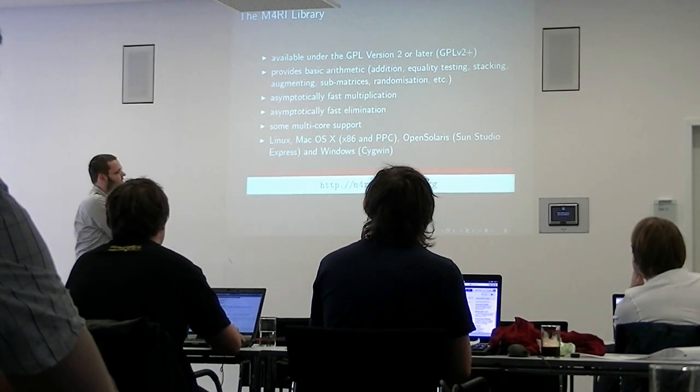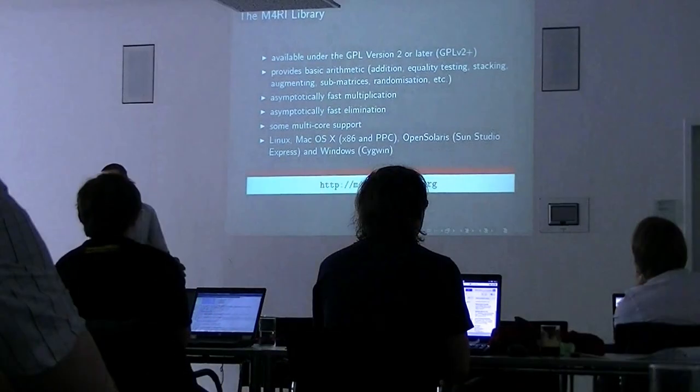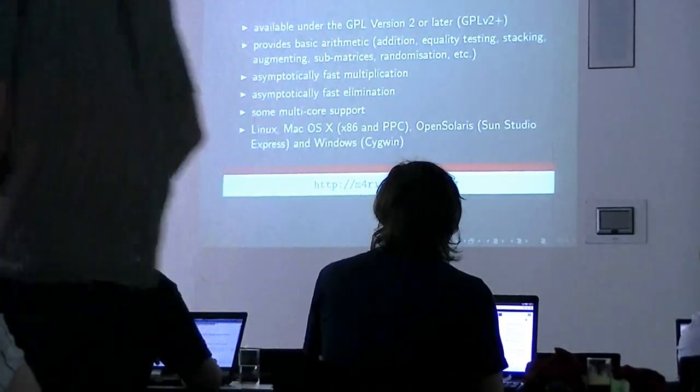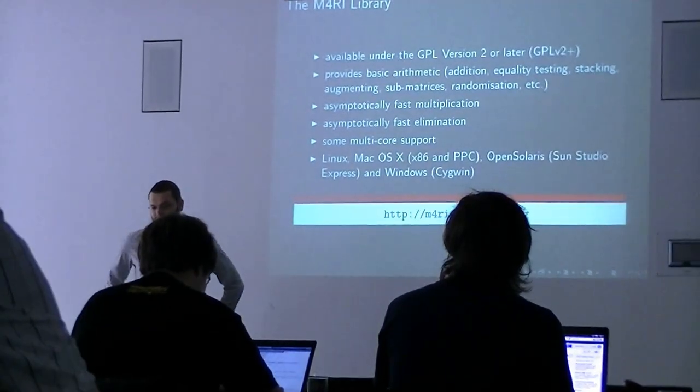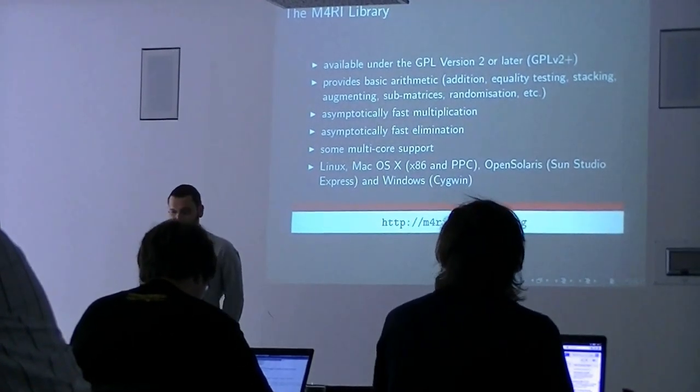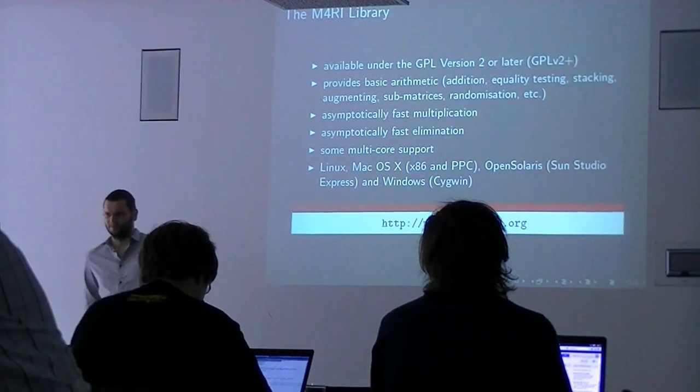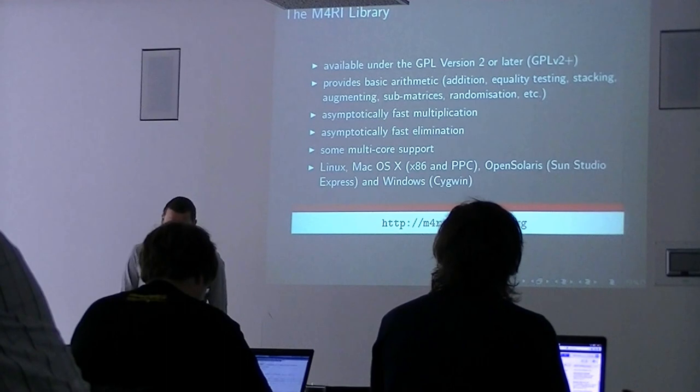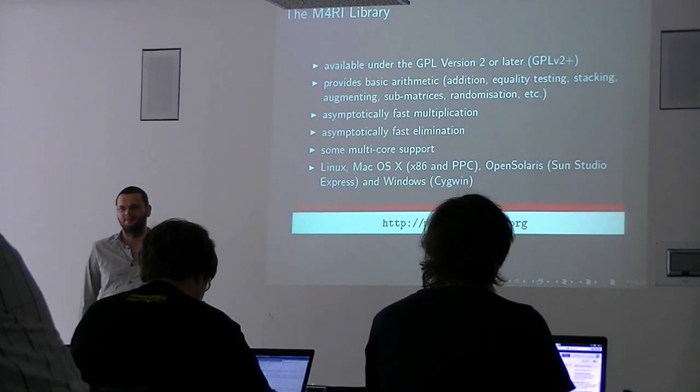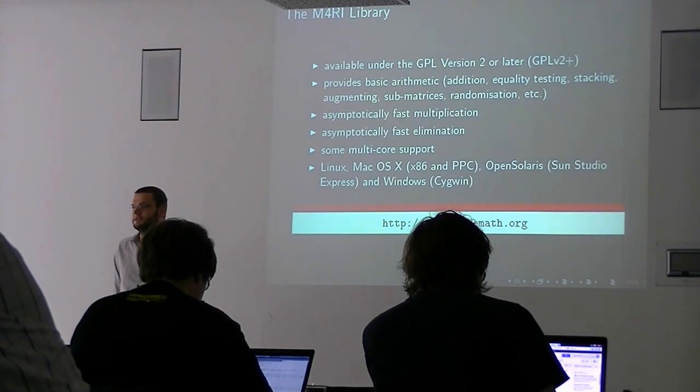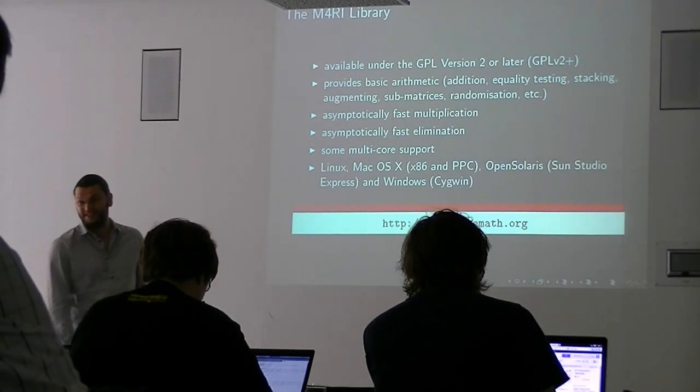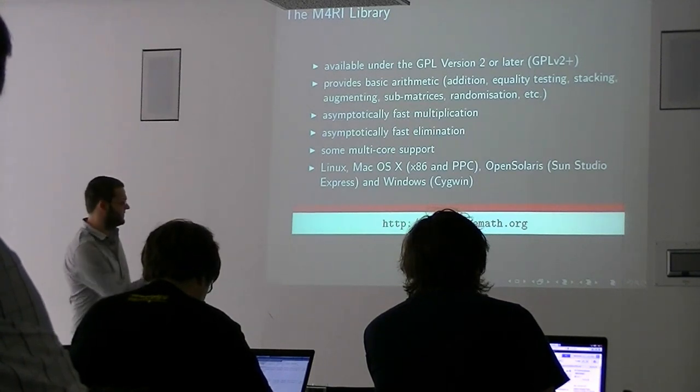The M4RI library is available under the GPL version 2 or later, and it provides what you expect these libraries to provide - the basic arithmetic, the easy stuff, and then the perhaps not so easy stuff like asymptotic fast multiplication and elimination, and high level stuff like regular system solving. We do have a little bit of multicore support, but to be honest it's not great. Partly because the whole thing is very cache bound. At least on my desktop I can't really expect much to be faster. It's available for Linux, OSX, Solaris, even compiles under Windows I'm told.